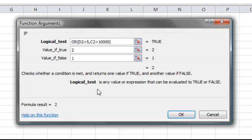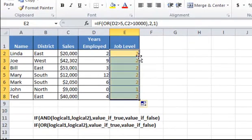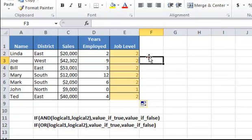And now, it will return a job level of 2, which is our TRUE value, if either of those two conditions are met. So let's click OK and I'll just re-copy the formula. And you can see in this case that quite a few more sales people are now at job level 2.